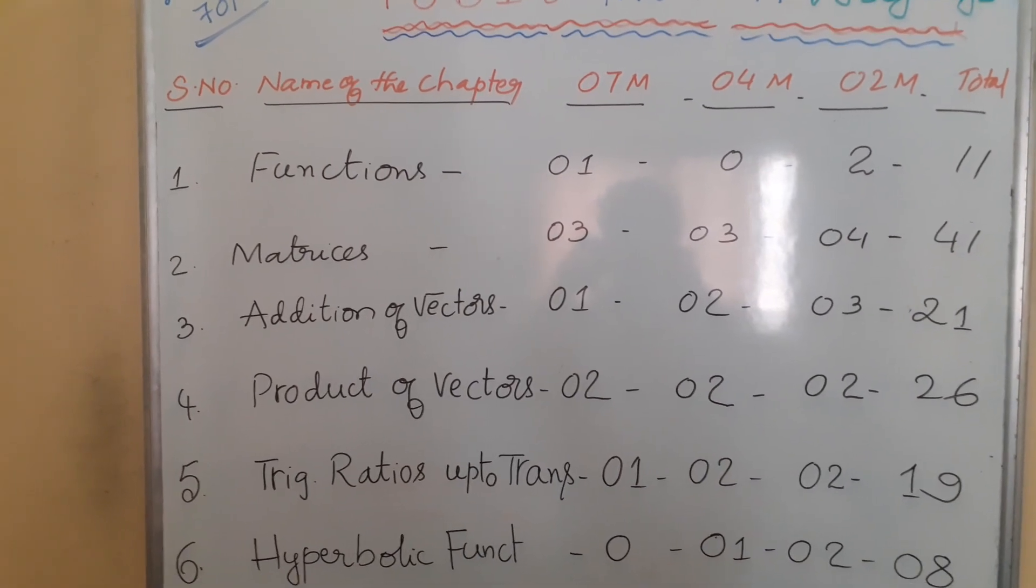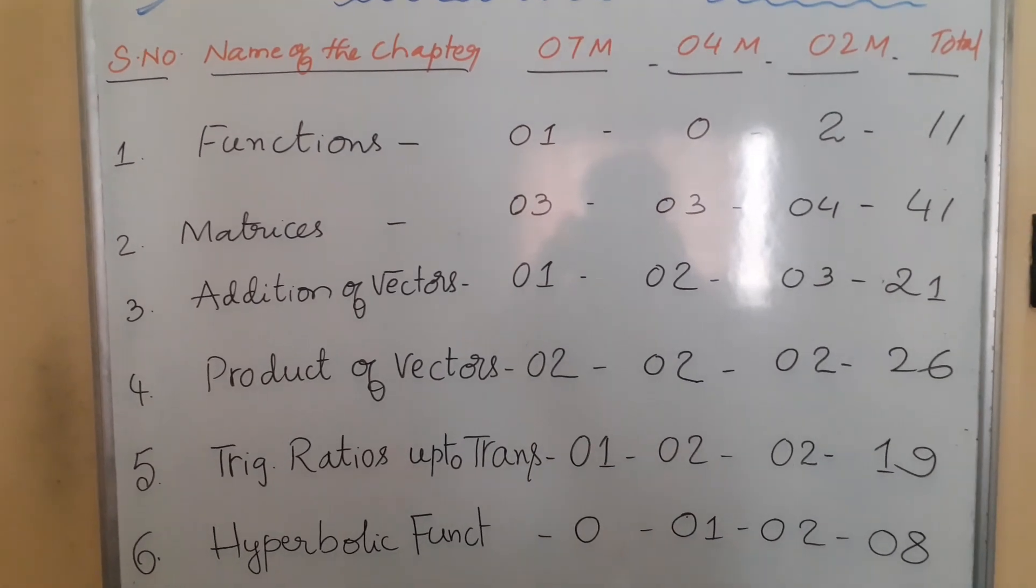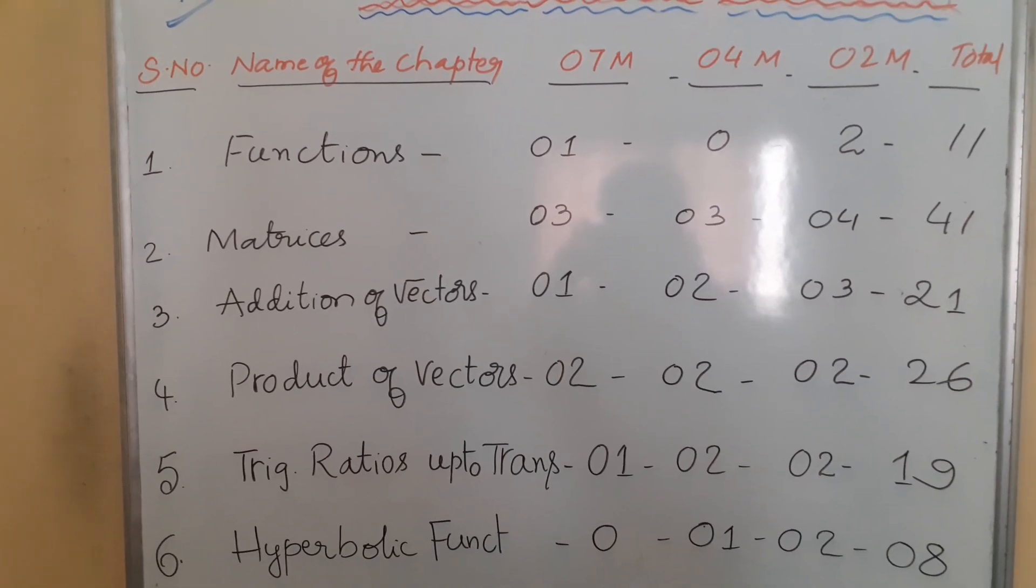Next one is Addition of Vectors. One 7-mark question, two 4-mark questions, three 2-mark questions. Total weightage is 21 marks.